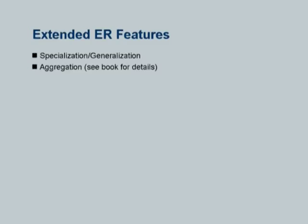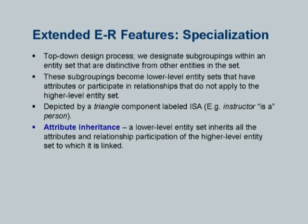That wraps up the basic ER features. There are also other ER features, of which specialization and generalization are very widely used. There is one more feature called aggregation, which is confusing because the word is used to mean different things by different people. Specialization is something everyone is familiar with - if you have done programming in Java or C++, you know what inheritance is. When a class inherits from another, one class is more general and one is more specialized. In the ER model, we have exactly the same concept.